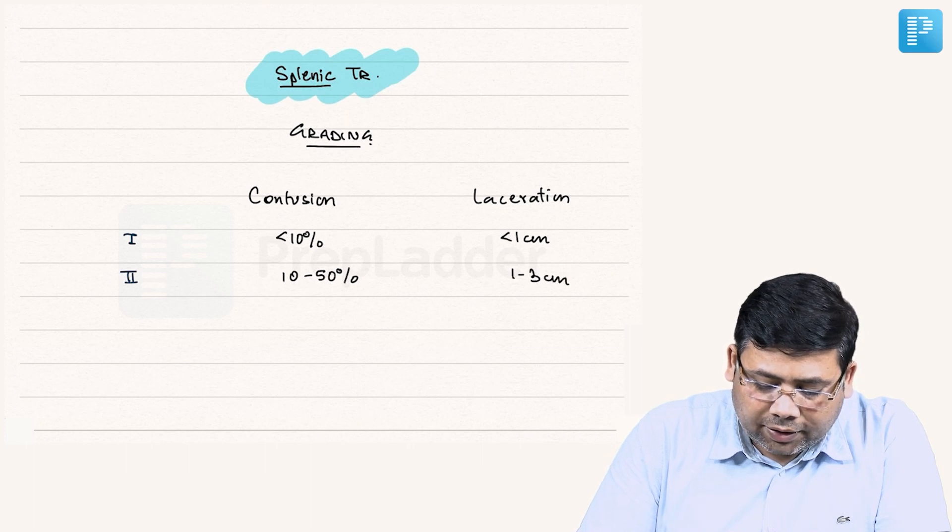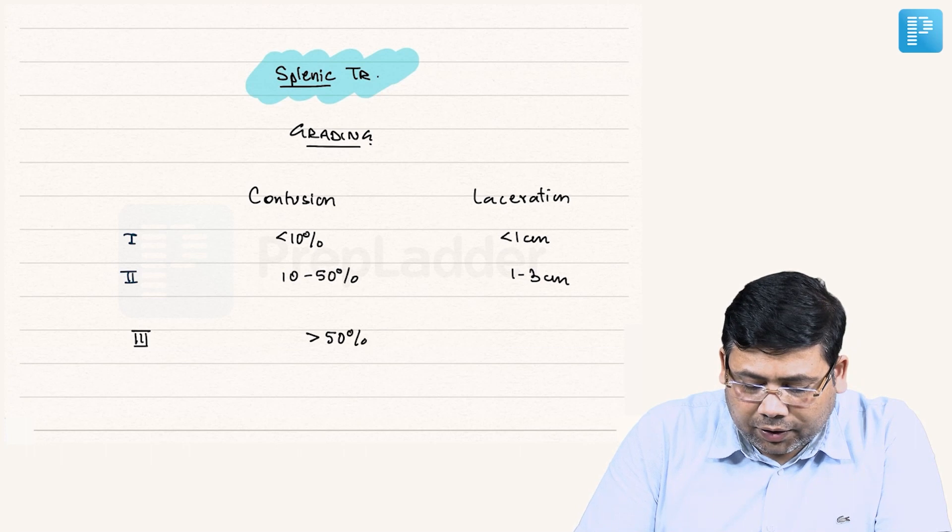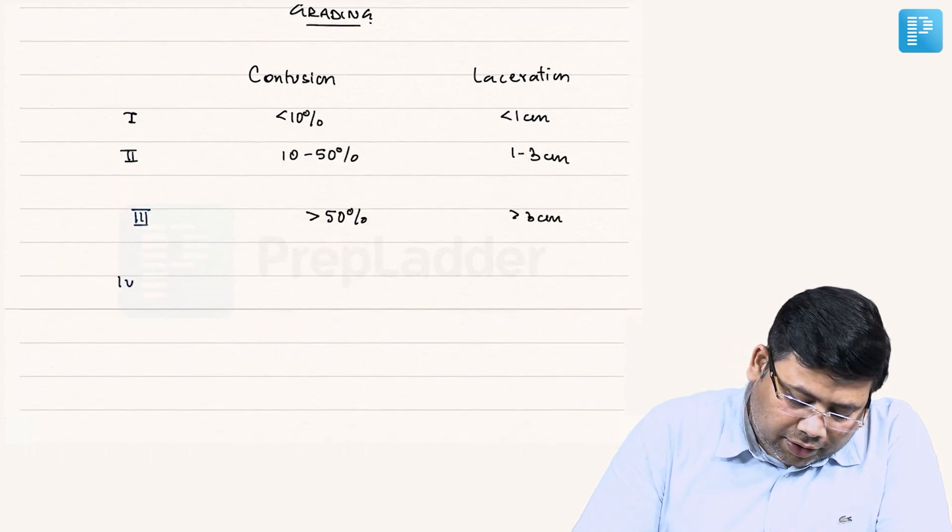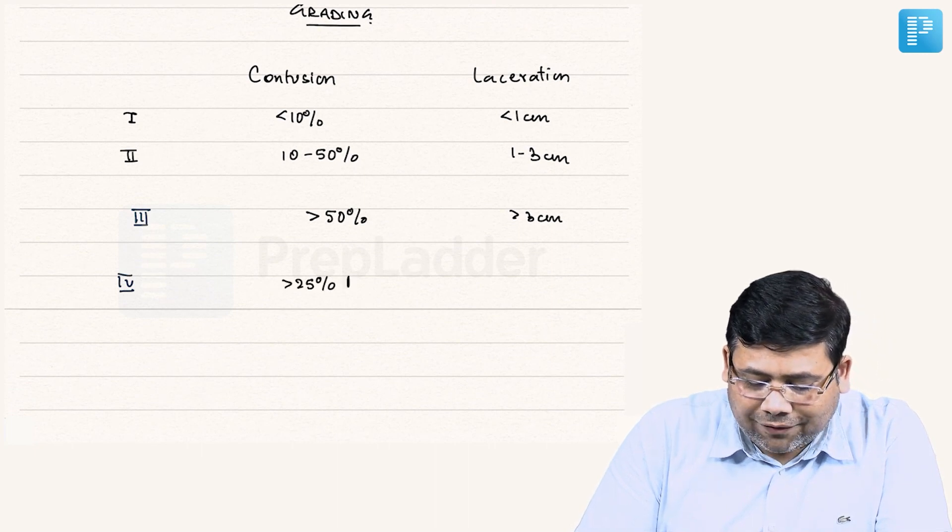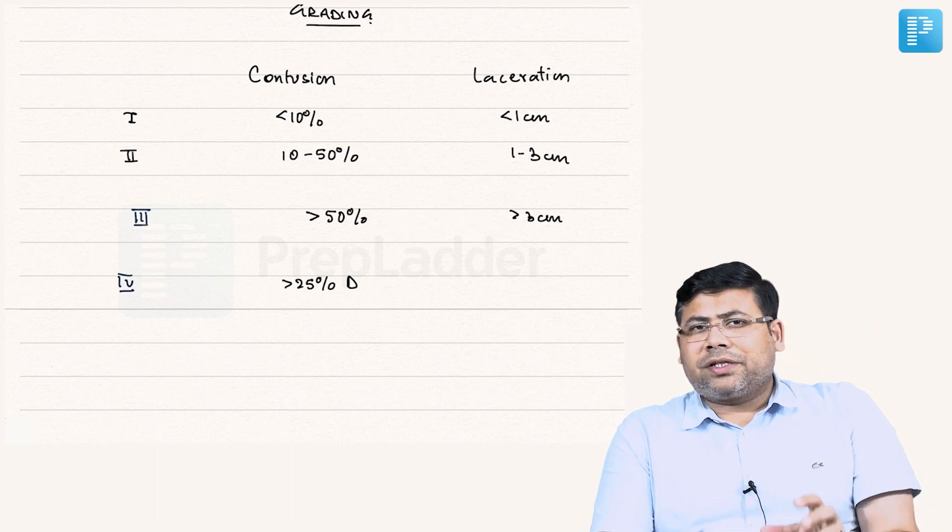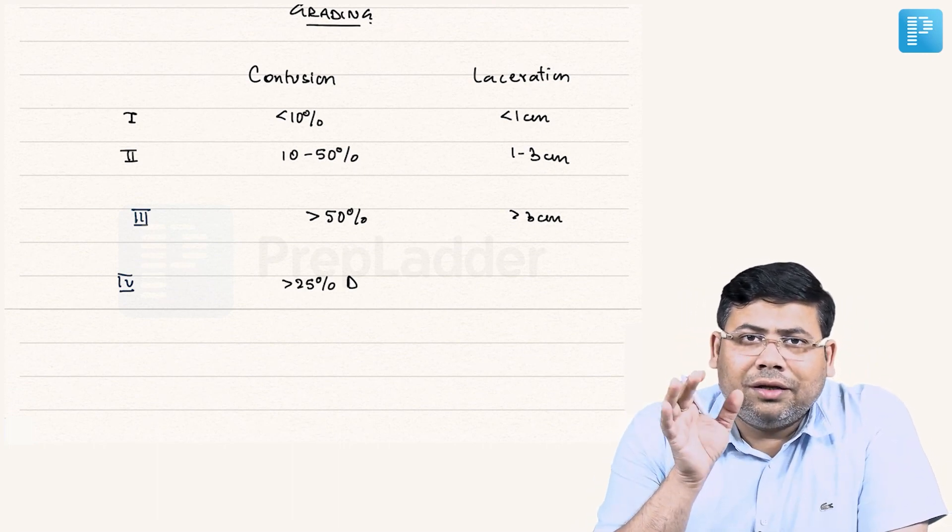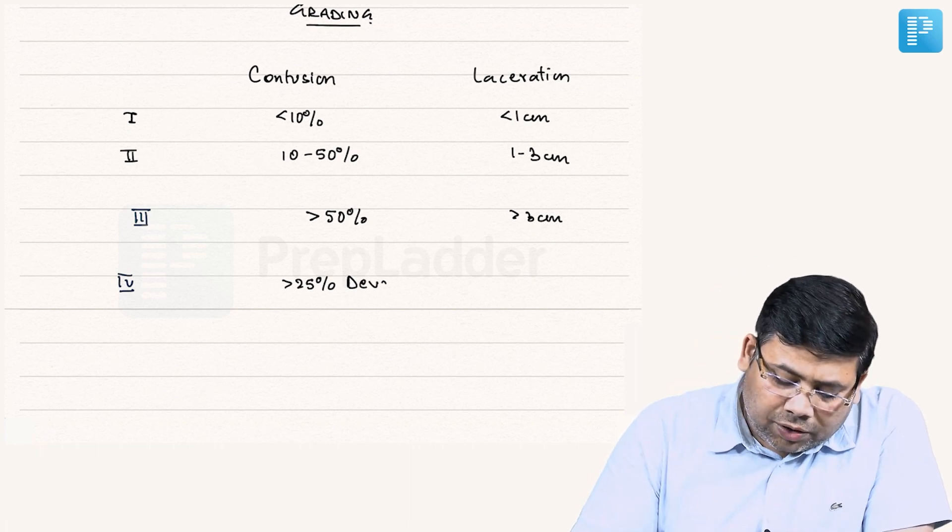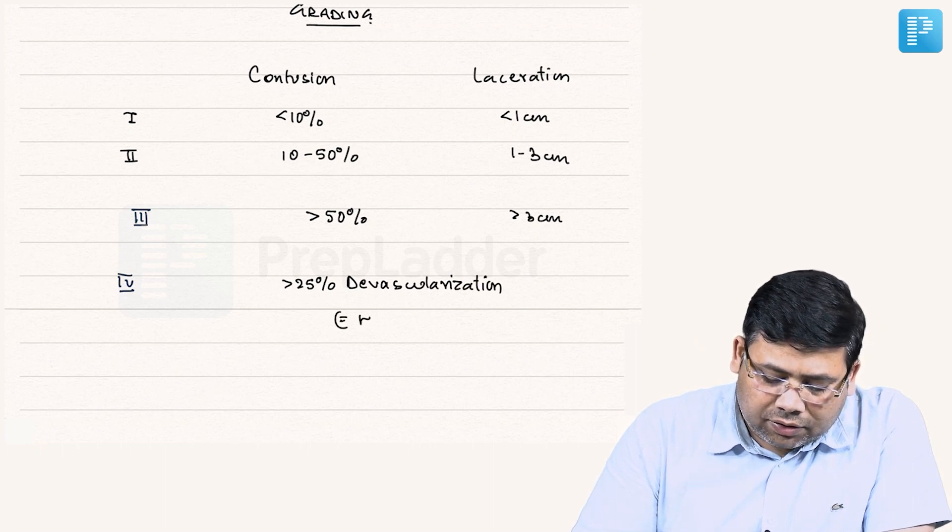Grade 3: more than 50% hematoma or more than 3 cm laceration. Grade 4: remember, more than 25% devascularization. Always remember, more than 25% devascularization is not a small thing. This is only possible when there is hilum injury. So if there is more than 25% devascularization, this equals hilum injury and qualifies for grade 4.